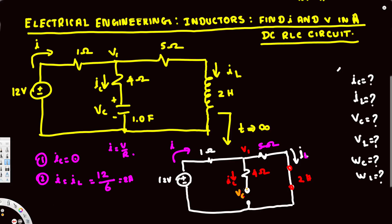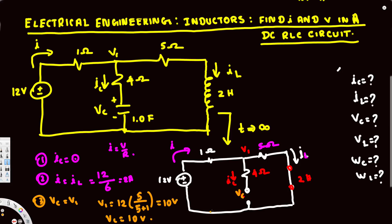Now let's find the voltage across the capacitor. When the capacitor is open there is no current flow, so VC is equal to V1. To find V1, we use the voltage divider: V1 = 12 times 5 over (5 + 1) = 12 × 5/6 = 2 × 5 = 10 volts. So V1 = 10 volts and VC = 10 volts.